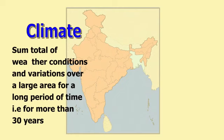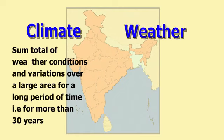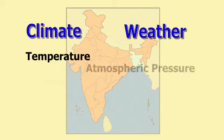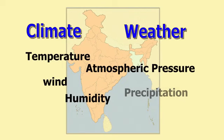If this is the definition of climate, what is weather? Weather refers to the state of the atmosphere over an area at any point of time. If it is raining, we say the weather is rainy; if it is very cool outside, we say the weather is cool. Now climate and weather are made up of the same elements: temperature, atmospheric pressure, wind, humidity, and precipitation.